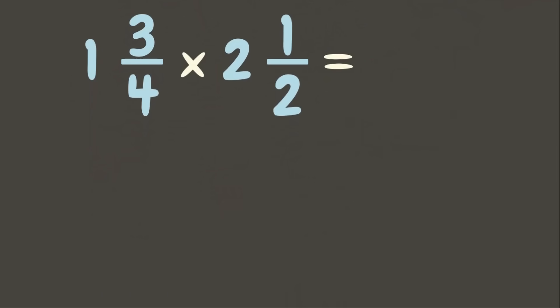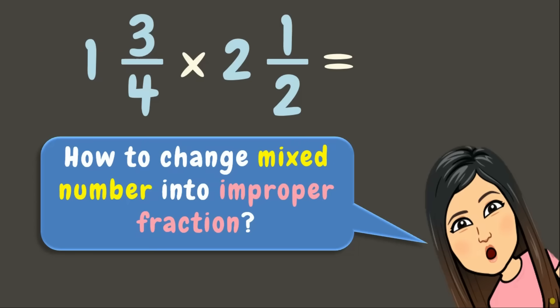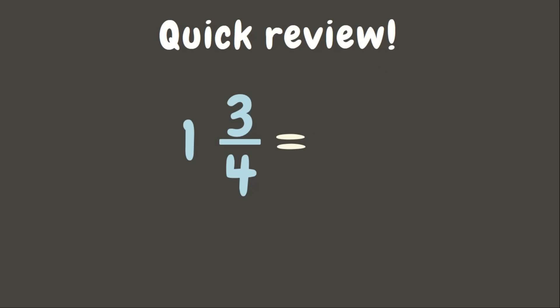Now this time, we are going to multiply mixed numbers. In multiplying mixed numbers, we need to change them into improper fractions. But how? Let's have a quick review. To change a mixed number into an improper fraction, we multiply the denominator by the whole number — 4 times 1 is 4 — then add it to the numerator: plus 3 is 7, and simply copy the denominator, 4. So 1 and 3 fourths is equivalent to the improper fraction 7 fourths.